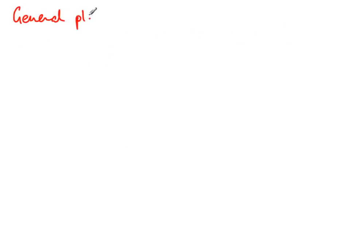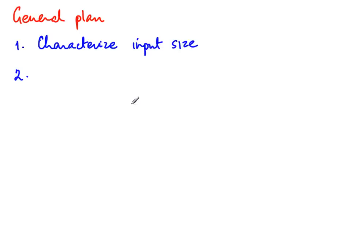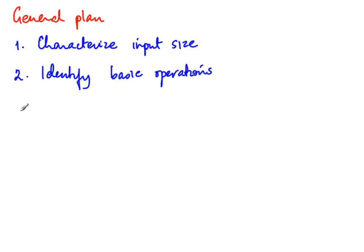This gives us a general strategy. First, characterize the input size — determine what it is that determines the input size. In this case, we declared the size of the array as the input size. Second, identify the basic operations. Basic operations are typically very simple: comparing two values, assigning a value, and so on. Third, identify how these operations vary as the input varies.